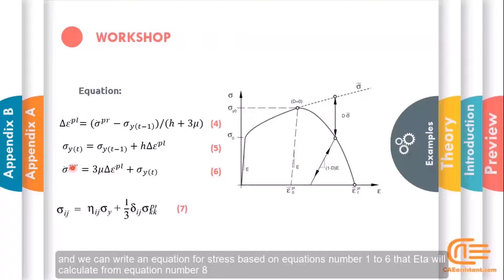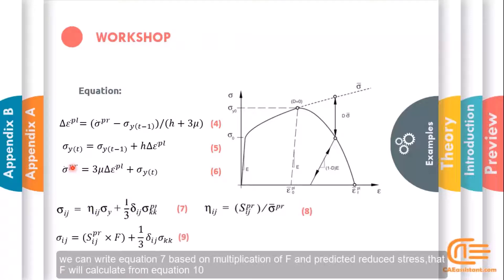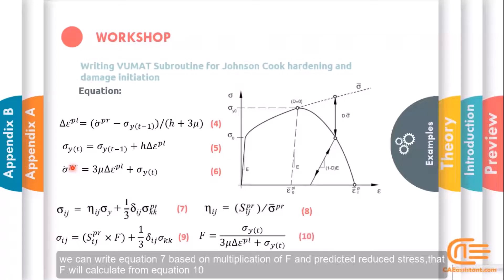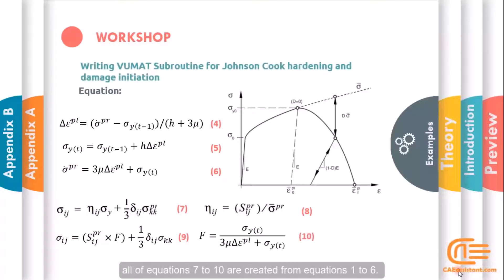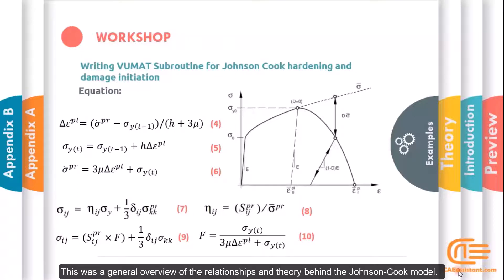The predicting stress will be calculated from equation number 6. We can write an equation for stress based on equations 1 to 6, where eta will be calculated from equation number 8. Equation 7 can be written based on the multiplication of f and the predicted reduced stress, where f is calculated from equation 10. All of equations 7 to 10 are derived from equations 1 to 6. This was a general overview of the relationships and theory behind the Johnson-Cook model.